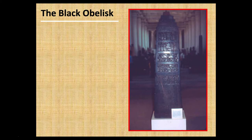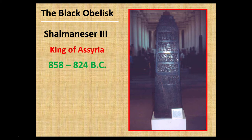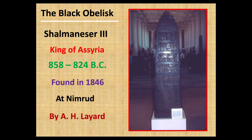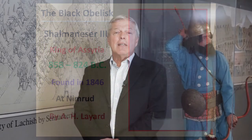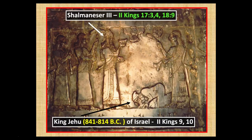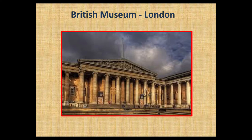Let's look at the Black Obelisk, which records some of the conquests of Shalmaneser III, king of Assyria from 858 to 824 BC. The Black Obelisk was found in 1846 at Nimrod by Austin Henry Layard. On one of the side panels we have Shalmaneser III pictured, who you can read about in 2 Kings 17 and 18. We also have an actual picture of King Jehu, who ruled Israel from 841 to 814 BC — found in 2 Kings 9 and 10. To date, this is the only extant inscription or monument with an actual picture of an Israelite king. This monument is in the British Museum in London, which I was able to visit in 1976.